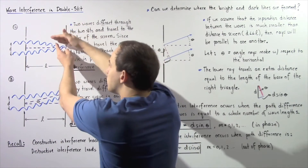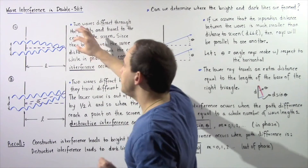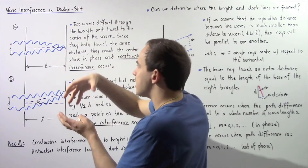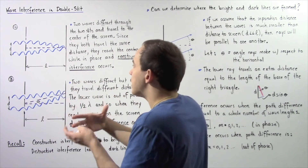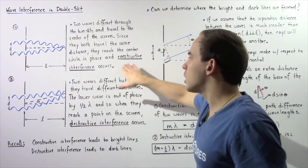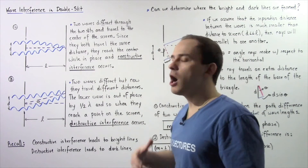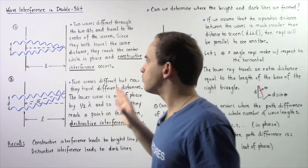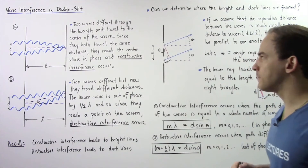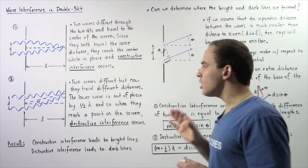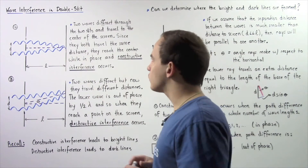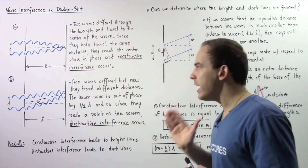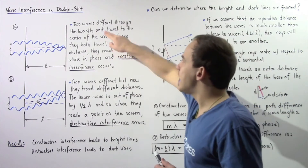they will end up converging at the same point and be exactly in phase. The amplitudes will sum up and be greater, creating constructive interference, which leads to a bright line — also known as a bright fringe — forming on the screen. In diagram A, we're choosing two waves that have the same wavelength and begin in phase.